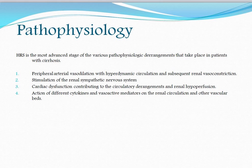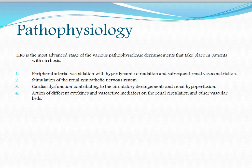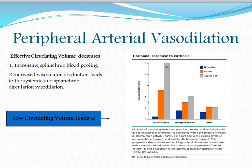There are four key mechanisms: first, peripheral arterial vasodilation with hyperdynamic circulation and subsequent renal vasoconstriction; second, stimulation of the renal sympathetic nervous system; third, cardiac dysfunction contributing to circulatory derangements and renal hypoperfusion; and fourth, action of cytokines and vasoactive mediators on the renal circulation and other vascular beds.